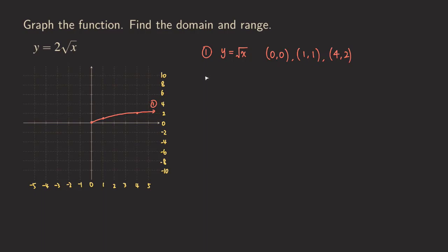So let's start graphing this one. We have 2 times the square root of x. We are still going to use the same x-values — the three key points: x = 0, x = 1, and x = 4. If you plug zero in, you are still going to get zero. So even when we multiply by two, it doesn't change — we still get zero for this y-value.